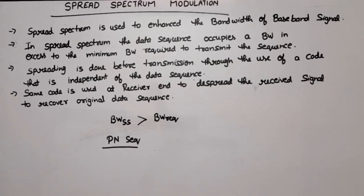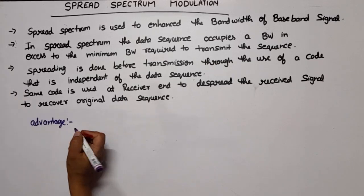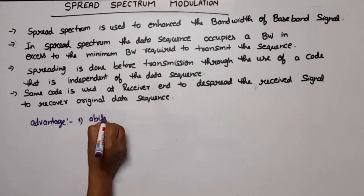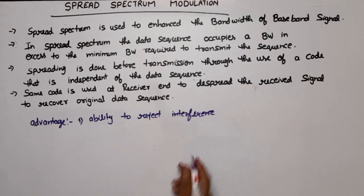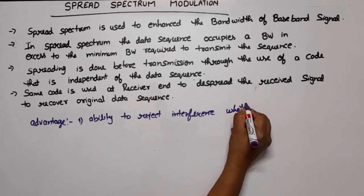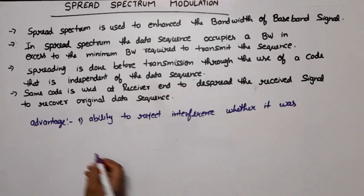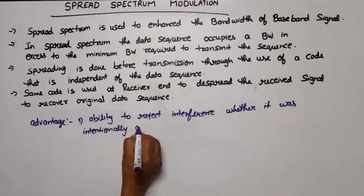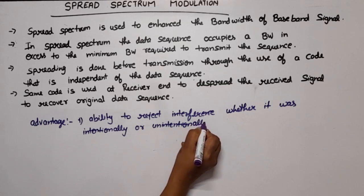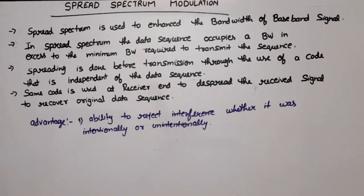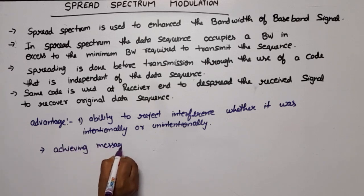One more thing, the PN sequences used at the transmitter end and receiver end, both should be synchronized. Now what are the advantages of spread spectrum? First advantage is ability to reject interference whether it was intentionally or unintentionally. Second, achieving message privacy in the presence of other listeners.